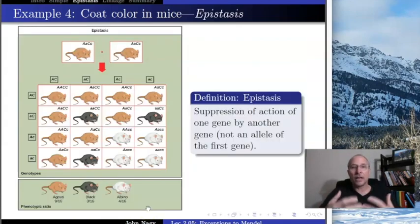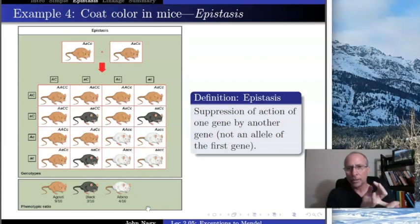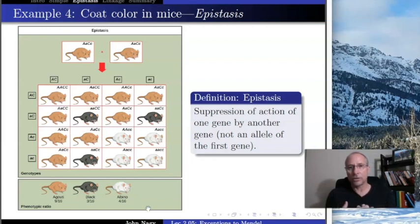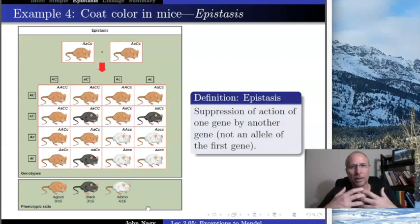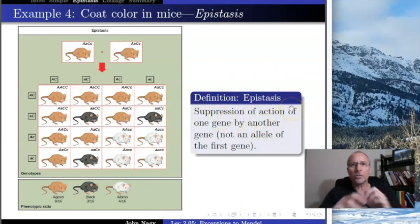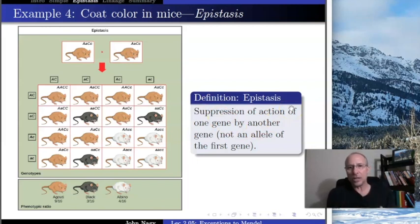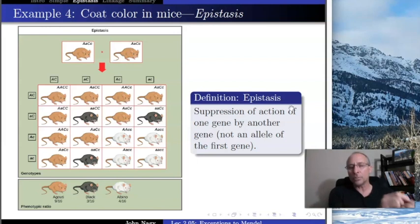This is a violation of Mendel's principles — not because of dominance, two particles per trait, or one particle from each parent, which all fit. The difference is that these traits are not independent; they interact with each other. The principle of independent assortment fails for these two genes. This type of interaction is called epistasis — the action of one gene depends on the state of another gene. The C gene determines whether the A gene can act; if C produces melanin, A has an effect, but if C doesn't produce melanin, A is irrelevant.